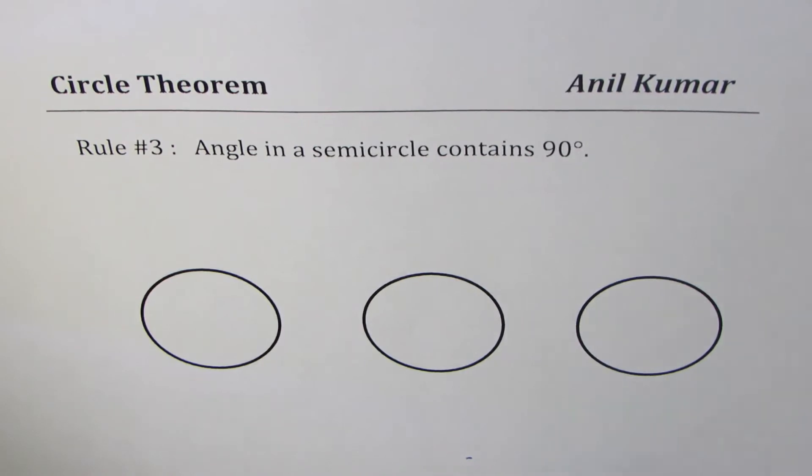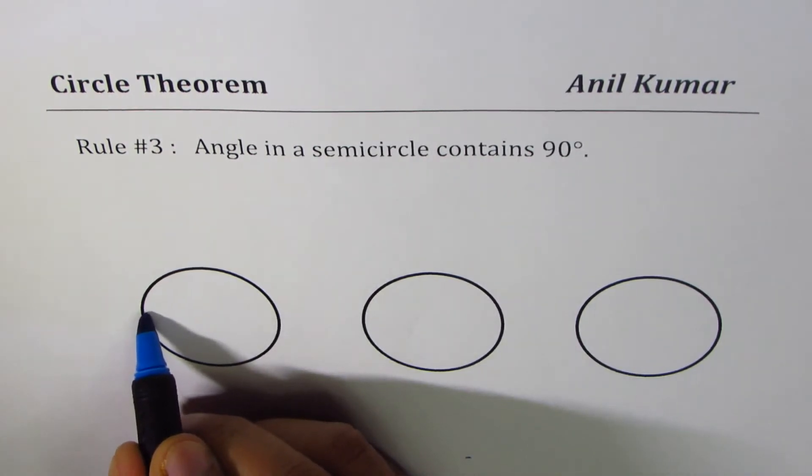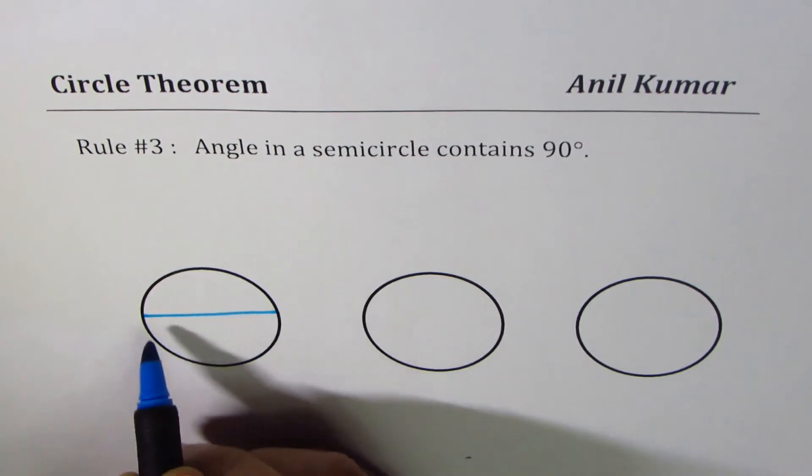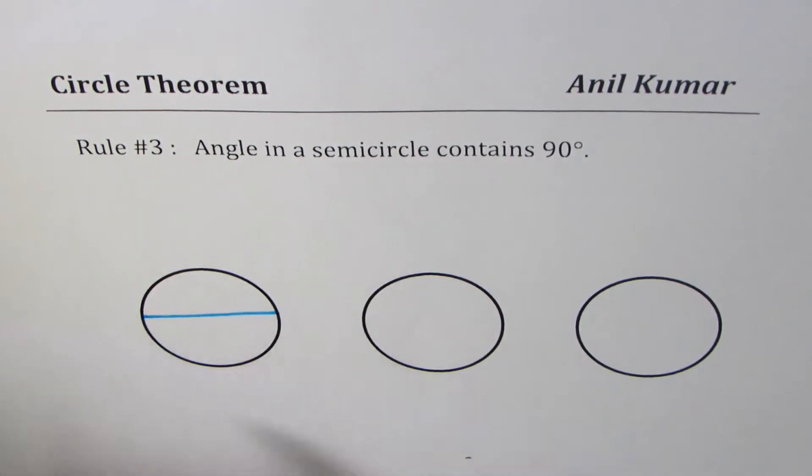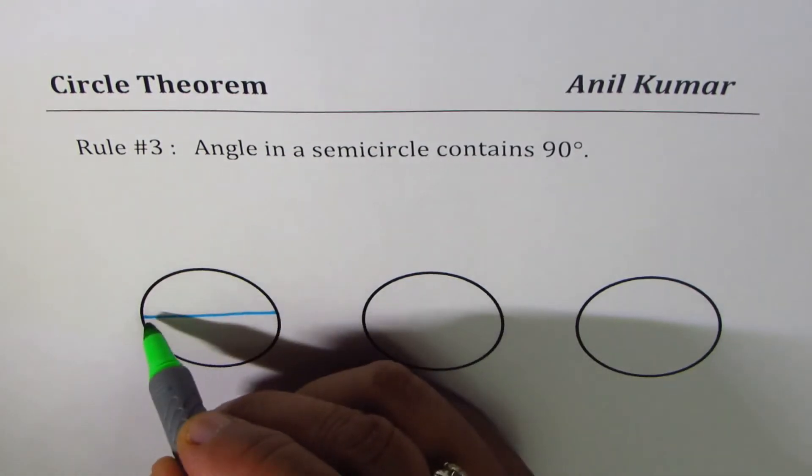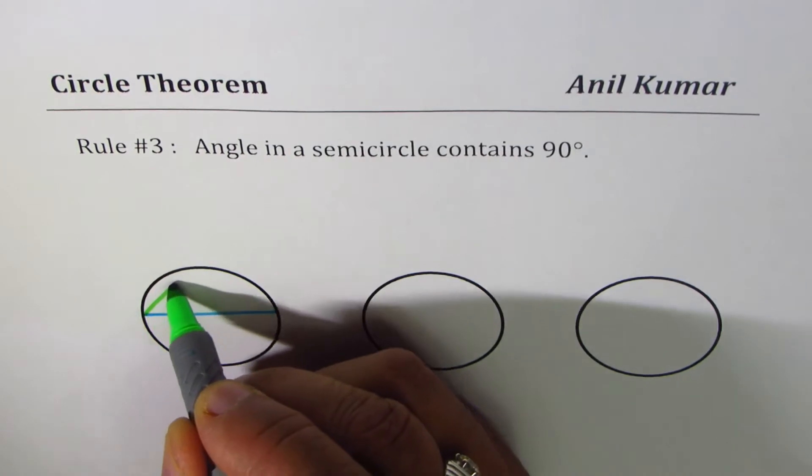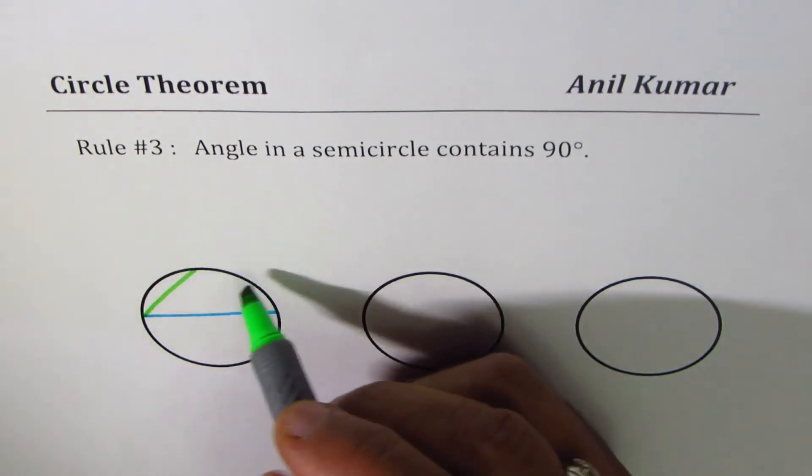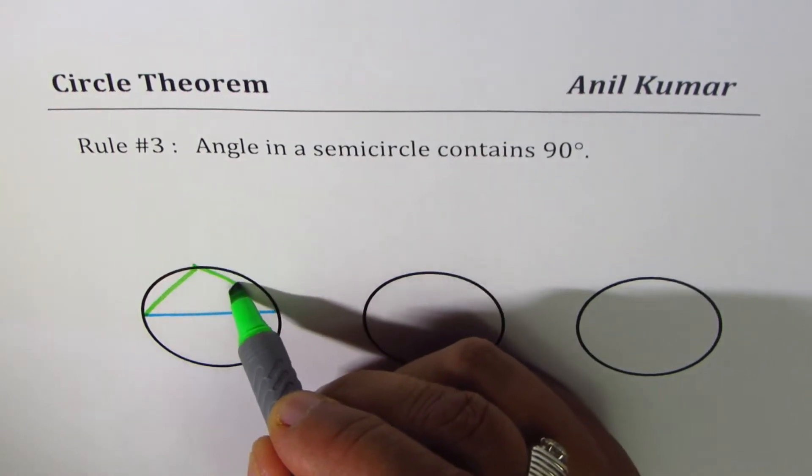What we're trying to say here is that if we form a triangle with the diameter as one of the sides, then any point on the circumference will result in a 90 degrees angle at that point.